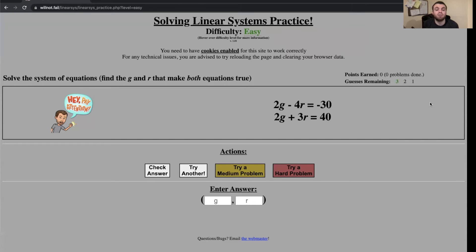After three guesses, it will reveal the answer and after a brief period of time it will go to a new problem. Here's an example: 2g minus 4r equals negative 30, 2g plus 4r equals 40. What I'm going to do, because I know Mr. Murray is going to want to see my work, is write this down on separate paper.